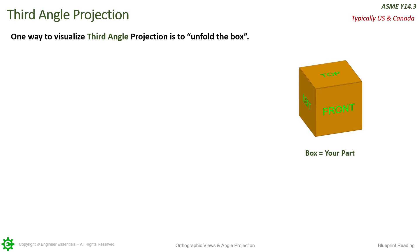Let's start with third angle and see how we can actually visualize taking a 3D object and unfolding it into a 2D object. One way to visualize third angle projection is to do what's called the unfold the box method. So let's say that this box right here is our part. You can see we have a top of the box, we have a left side, we have a front, and we also have a right and a back side as well. So where we put the drawing views is where they would be if we unfolded this box.